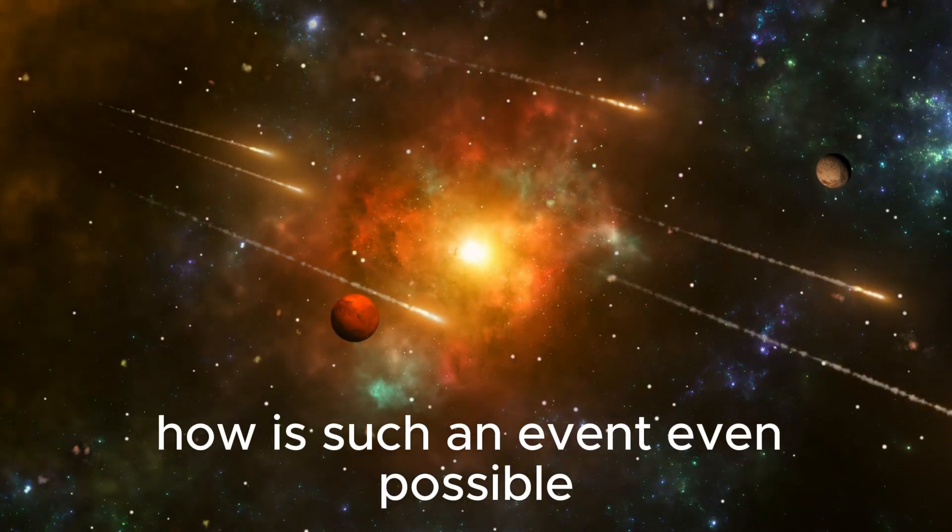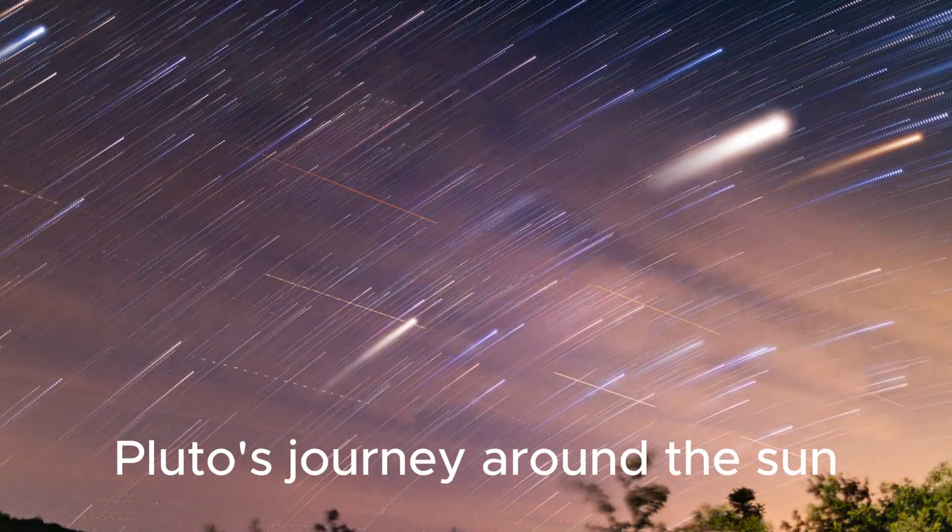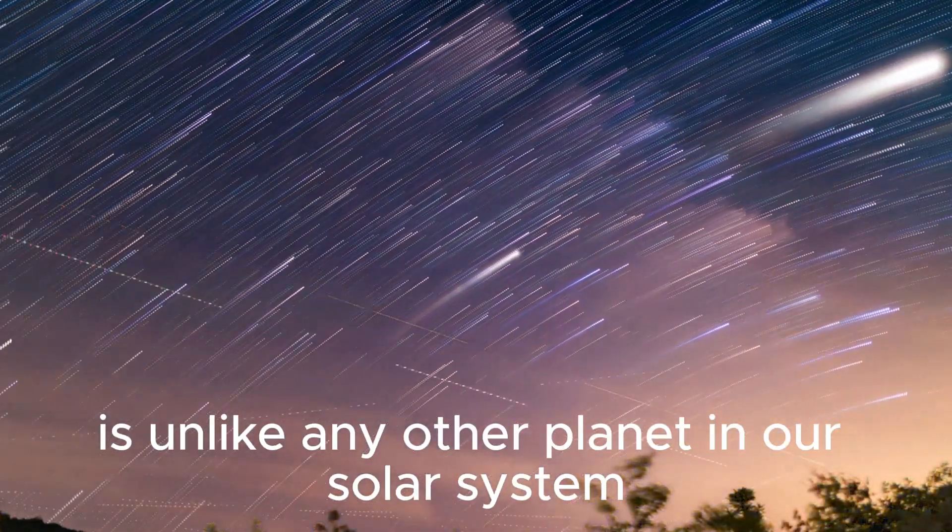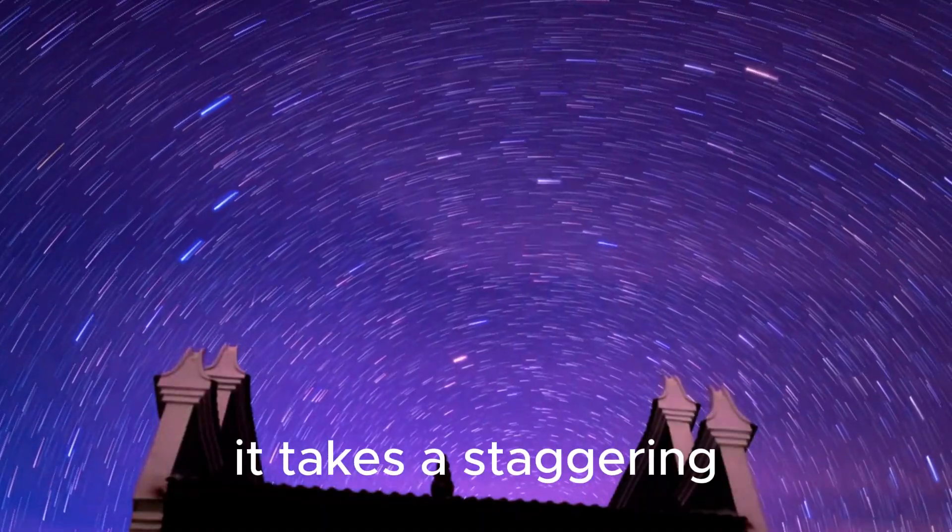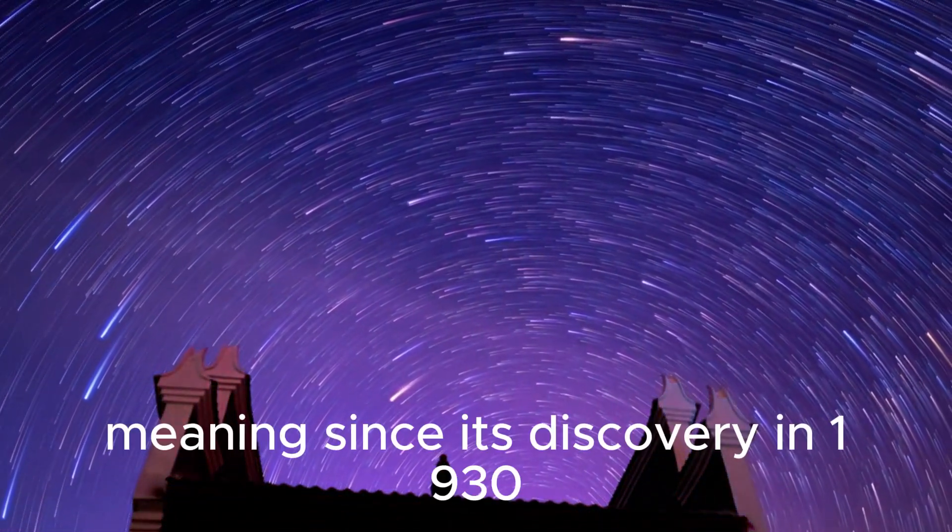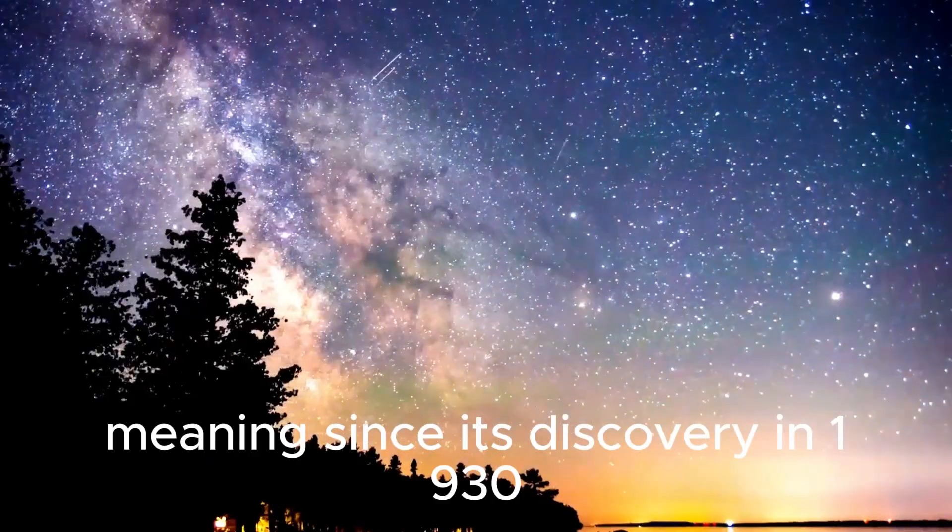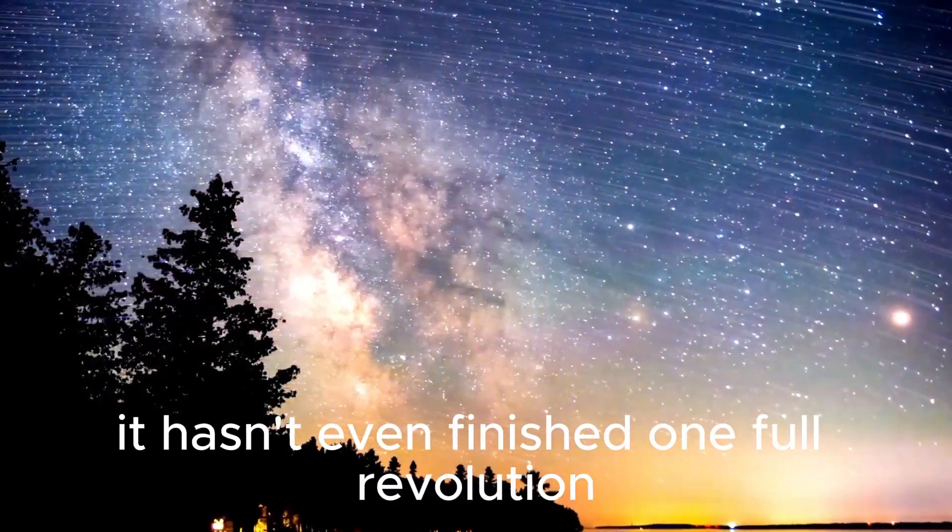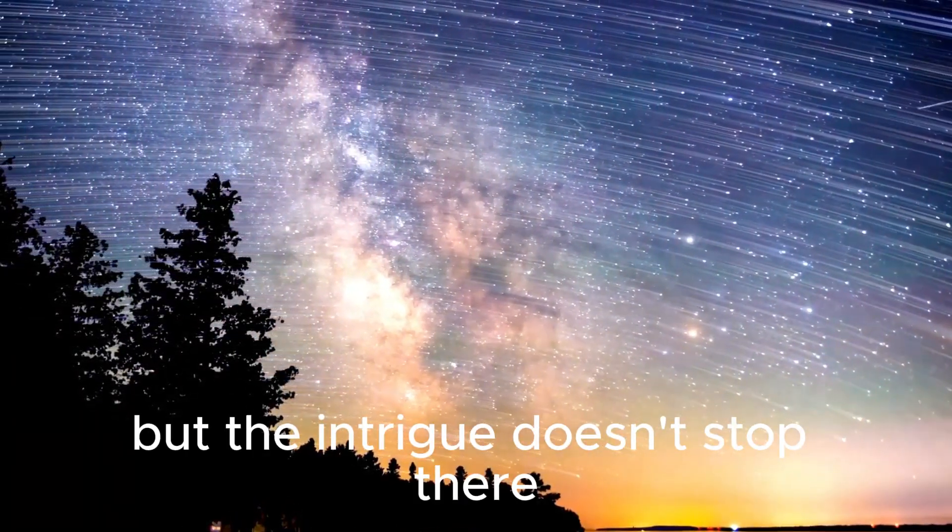How is such an event even possible? Pluto's journey around the Sun is unlike any other planet in our solar system. It takes a staggering 248 years to complete a single orbit, meaning since its discovery in 1930, it hasn't even finished one full revolution. But the intrigue doesn't stop there.